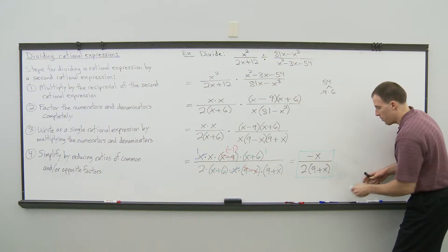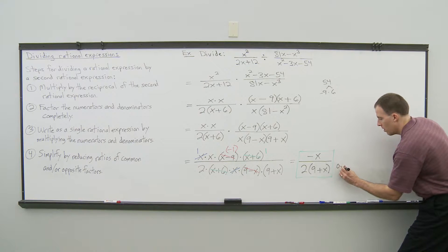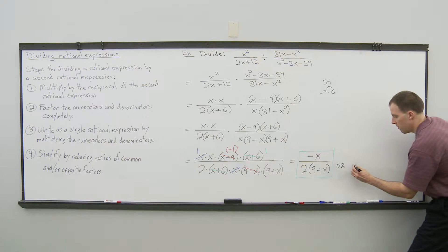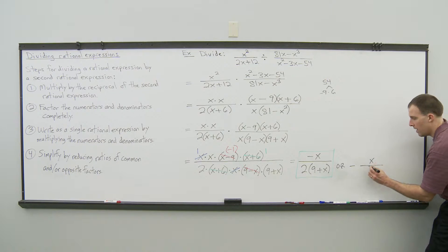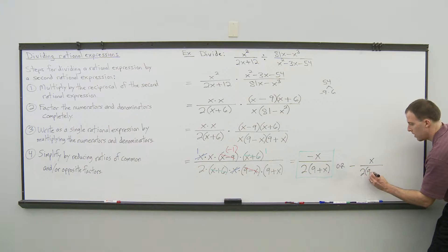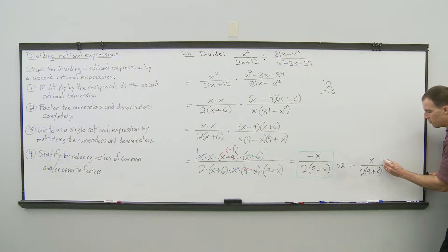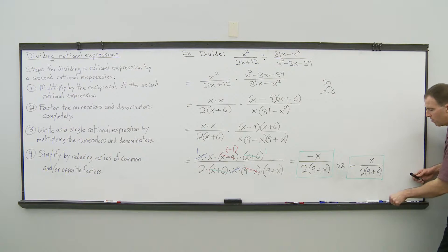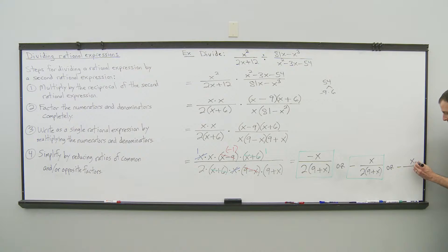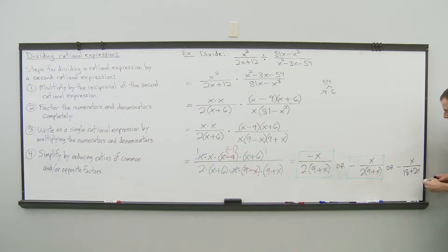There are other ways the final answer could be expressed. We could write it with the negative sign out in front of the fraction — the negative of x over 2 times the quantity 9 plus x. That's also acceptable. And the 2 could be distributed through the parenthesis on the bottom, giving the negative of x over 18 plus 2x. Those are all equivalent, acceptable simplified versions of the final answer.